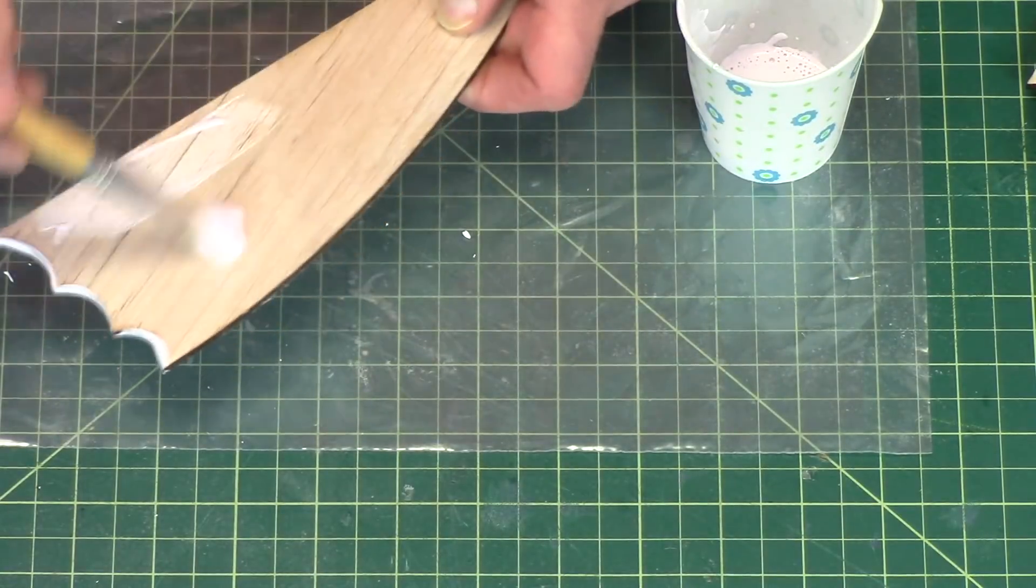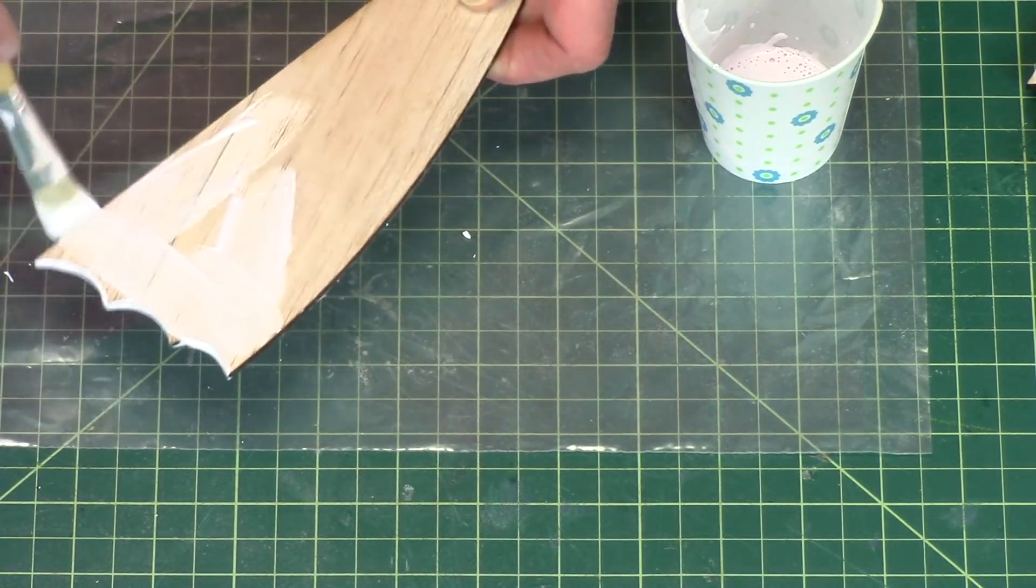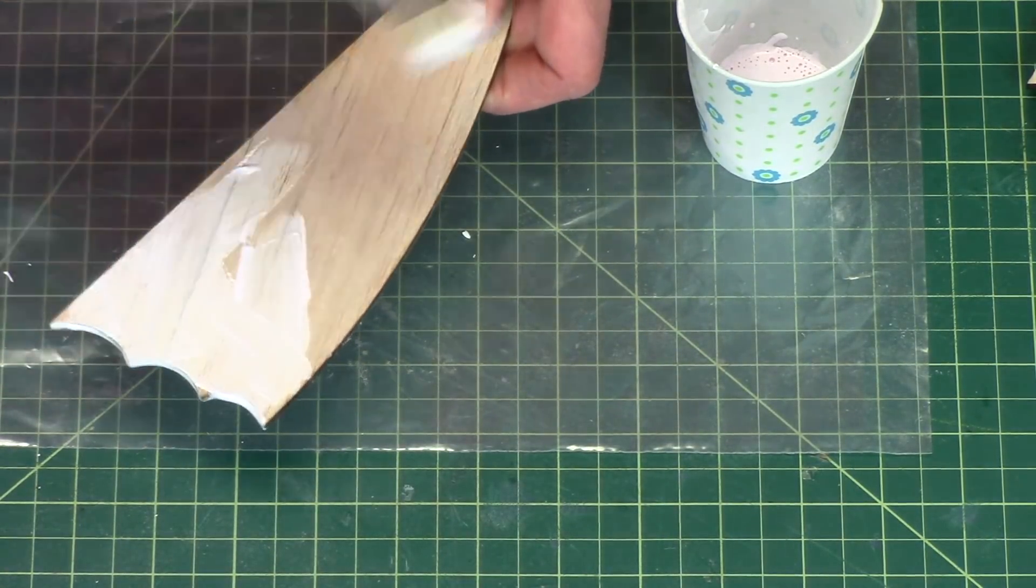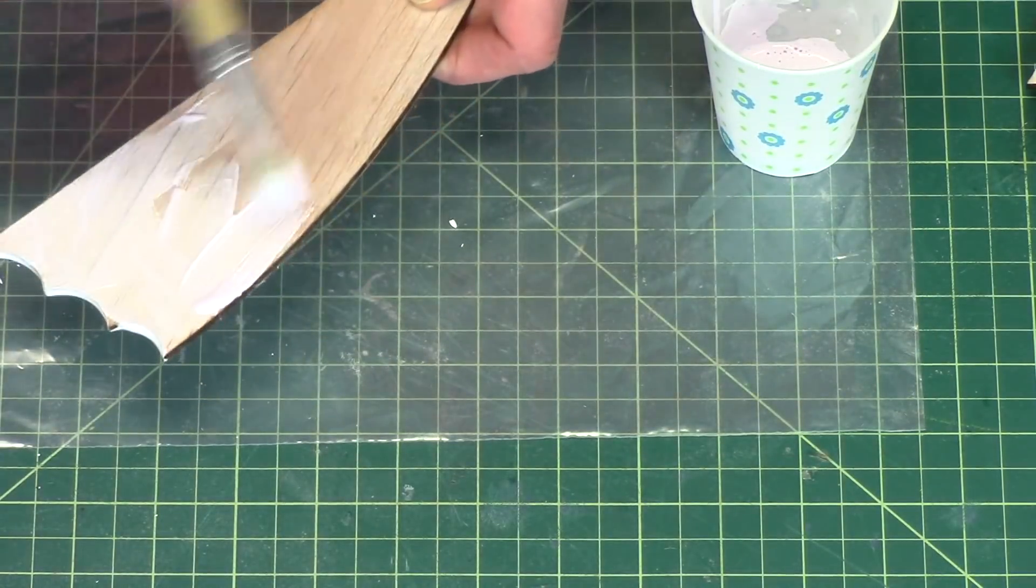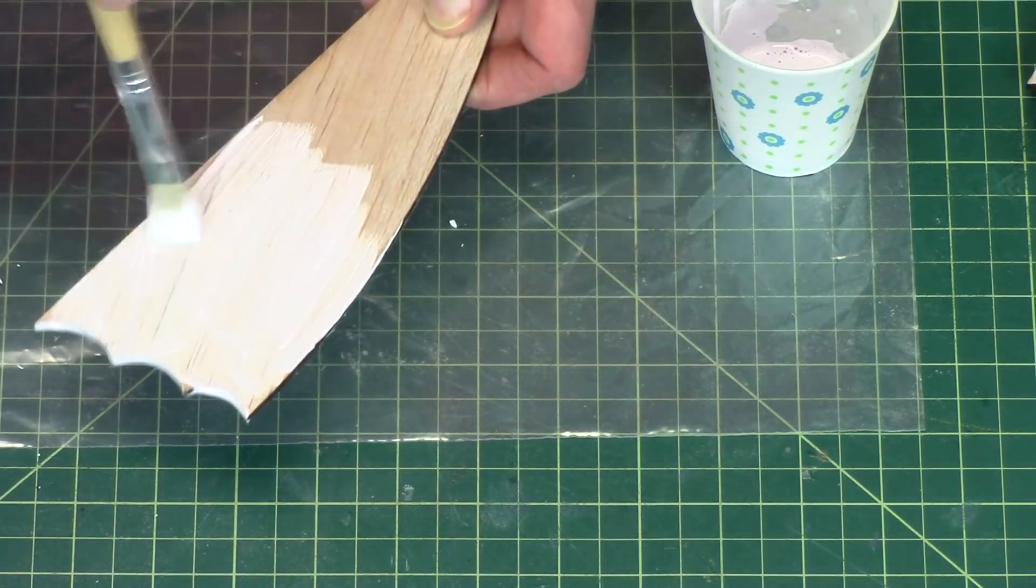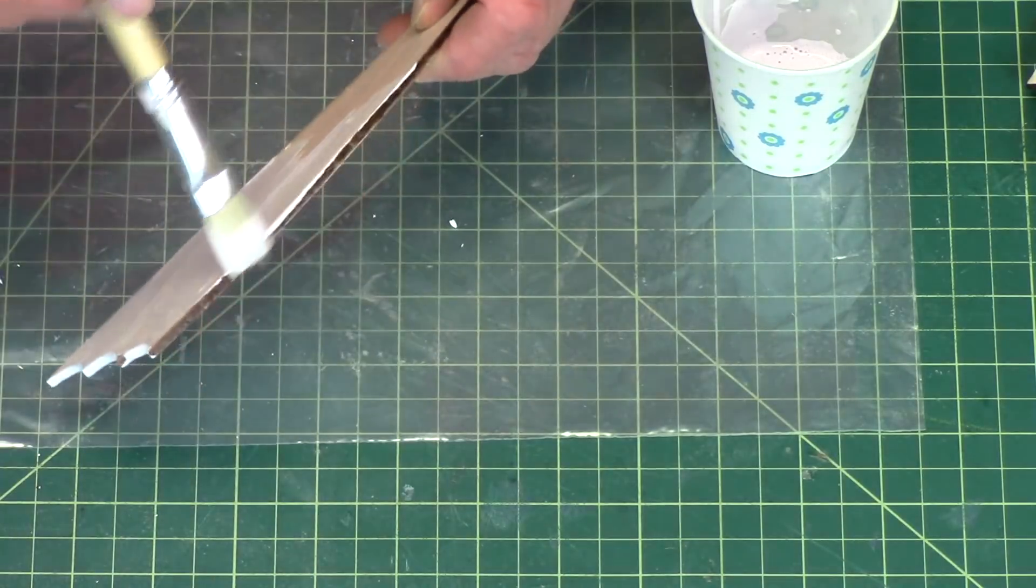I like to do both sides at the same time because it's got water in it, it can tend to warp the wood. So if you do both sides at the same time, the wood should go back flat if it does warp.